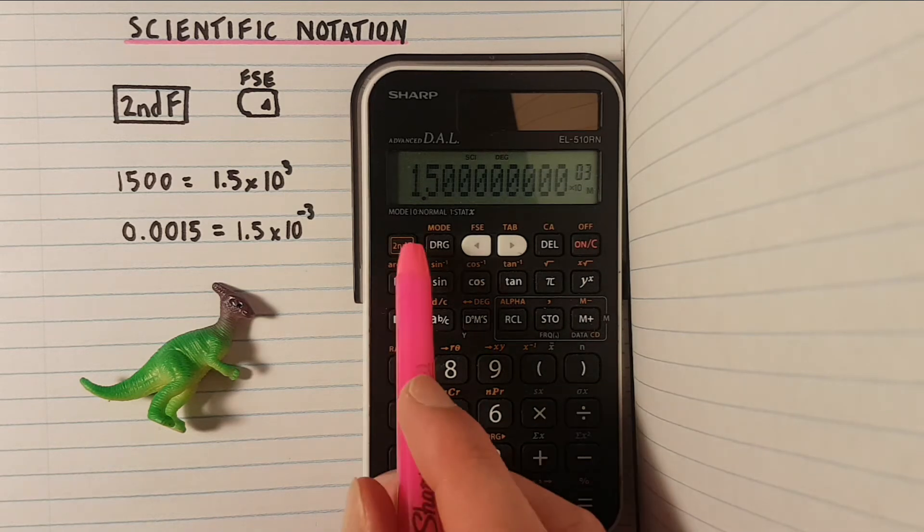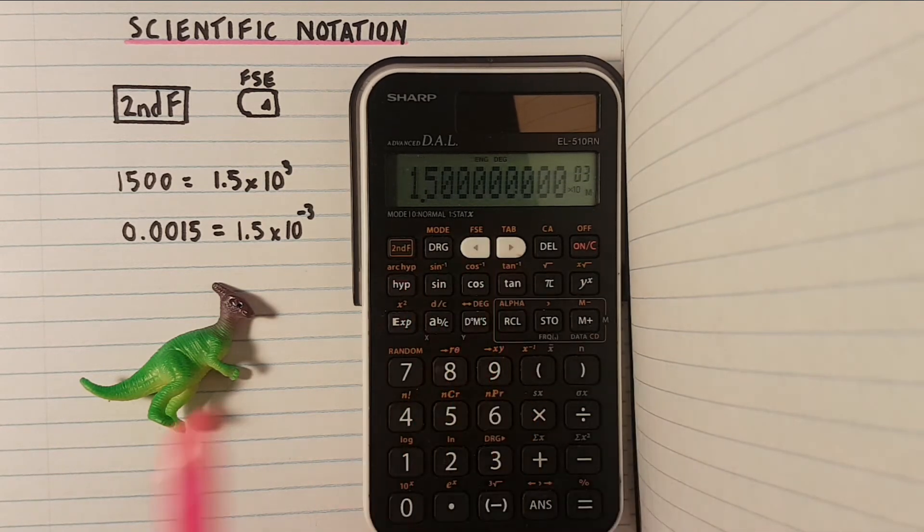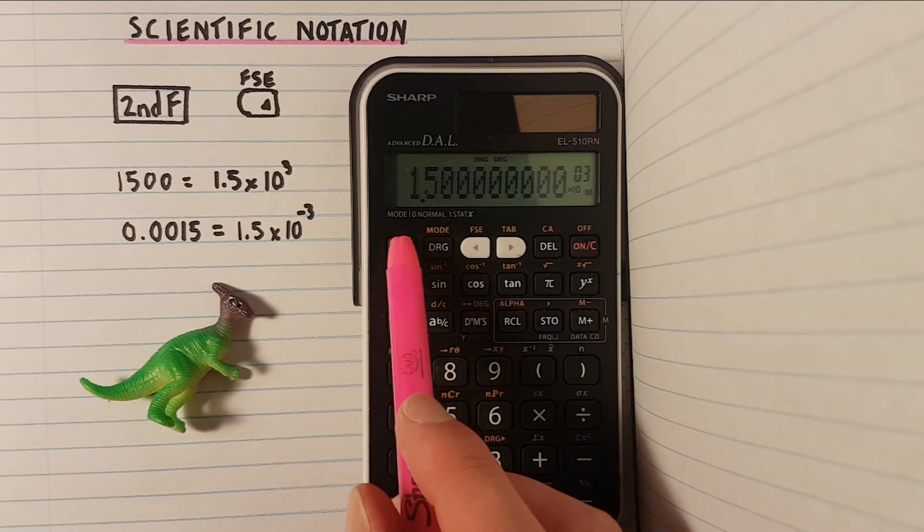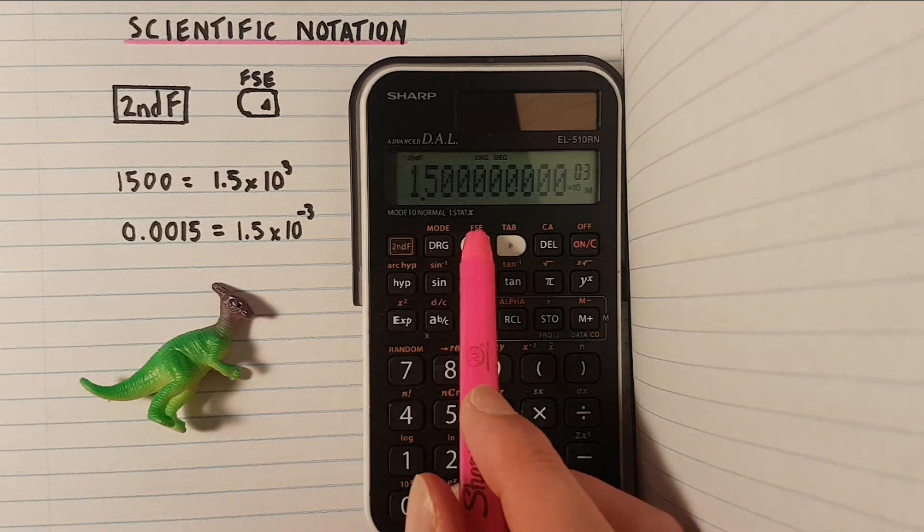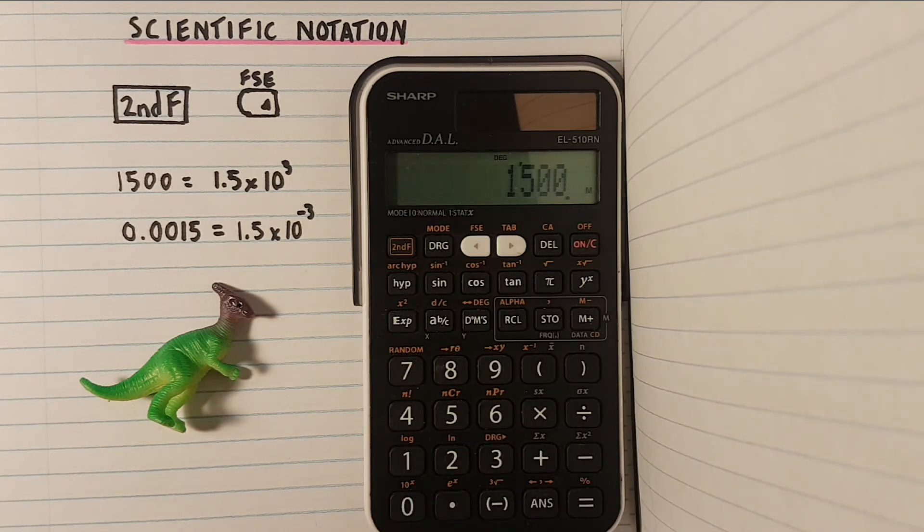If we hit second function, left arrow for a third time, we get engineering mode, and if we do this keystroke again, second function, left arrow, we get taken back to normal mode.